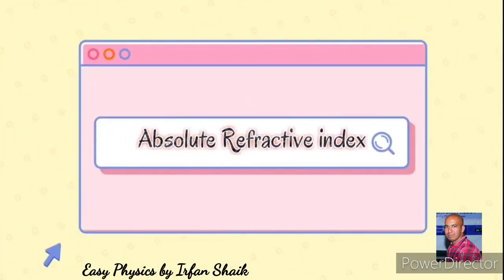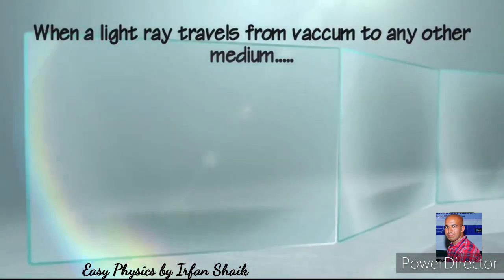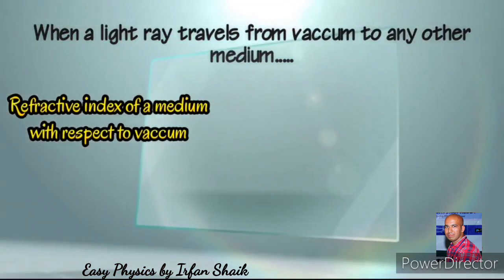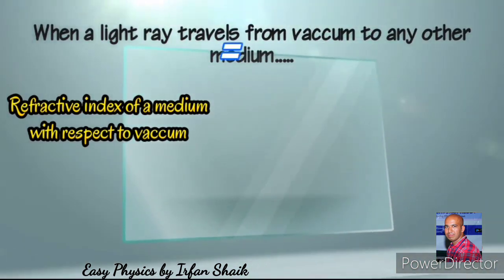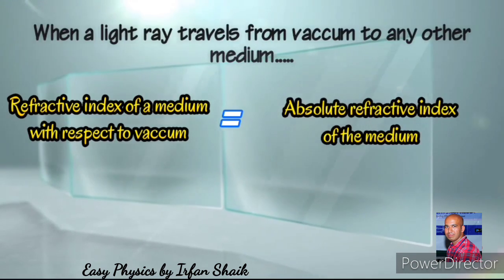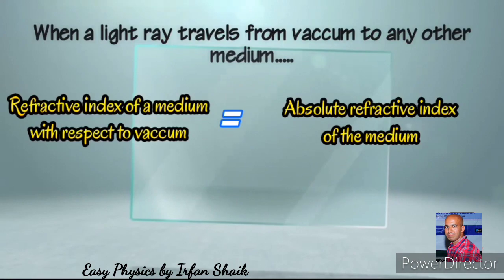Absolute refractive index: When a light ray travels from vacuum to any other medium, the refractive index of a medium with respect to vacuum equals the absolute refractive index of the medium. Refractive index is denoted by small n.